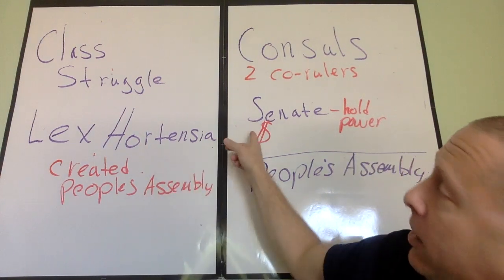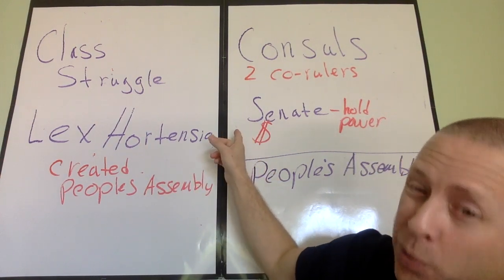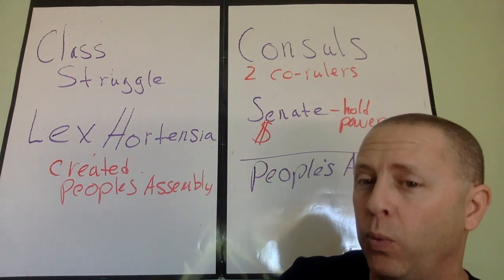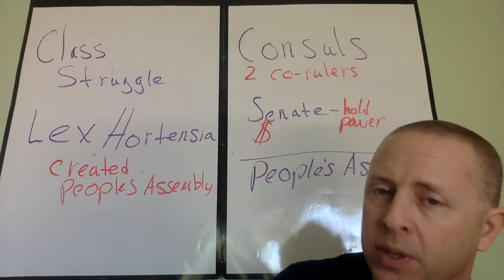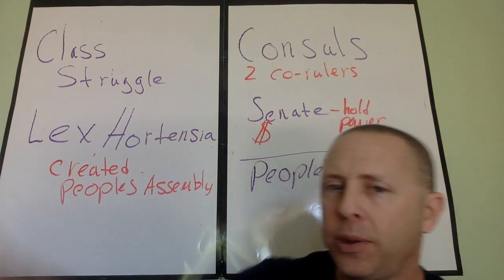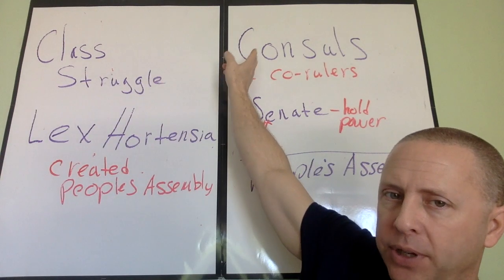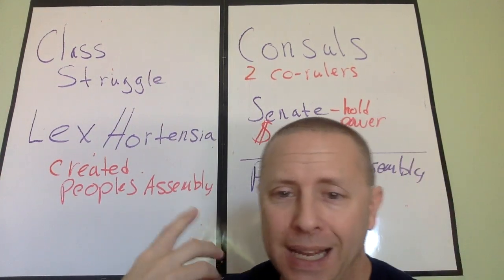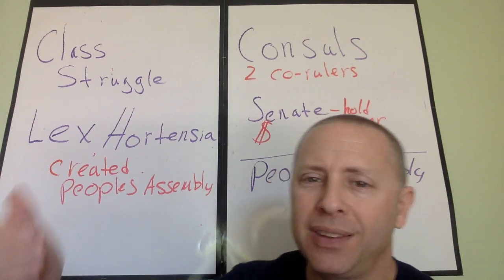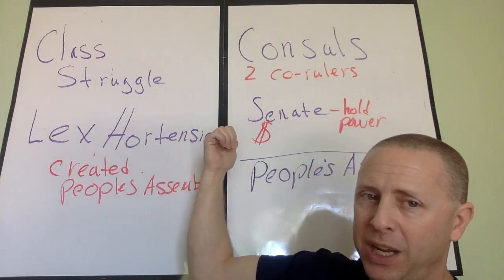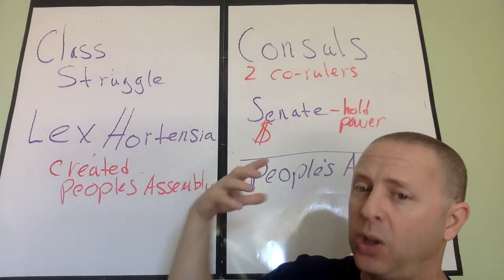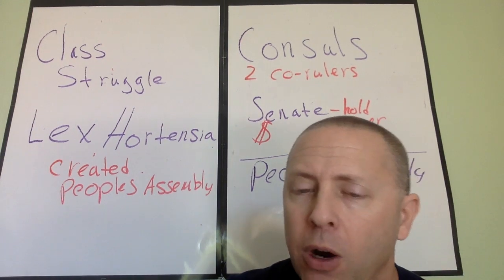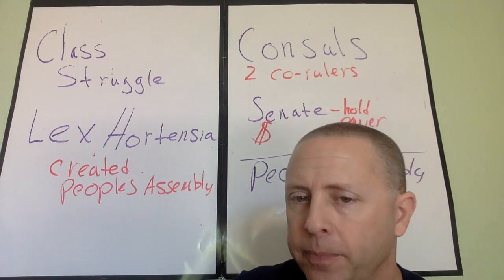Then underneath them was a senate that held the real power, and they were a group of wealthy people. You'd think that the people at the top, the consuls, would be the ones that would make the decisions. But the senate, which was made up of largely wealthy people, is the ones that held all the power and made all the decisions.